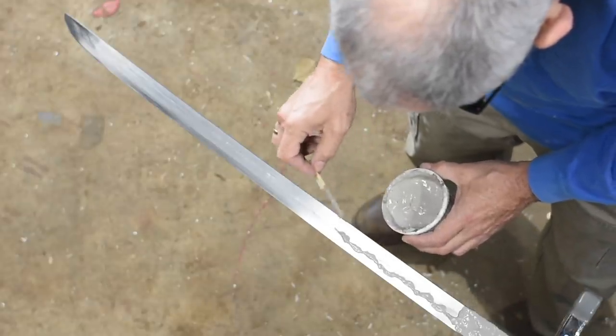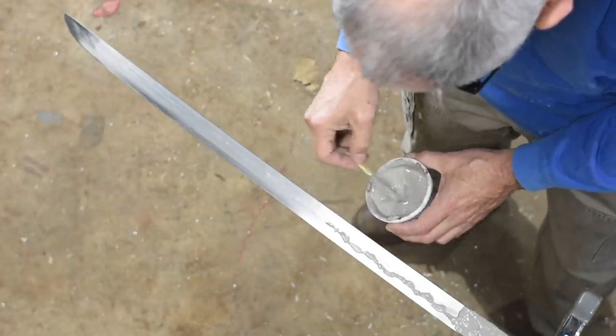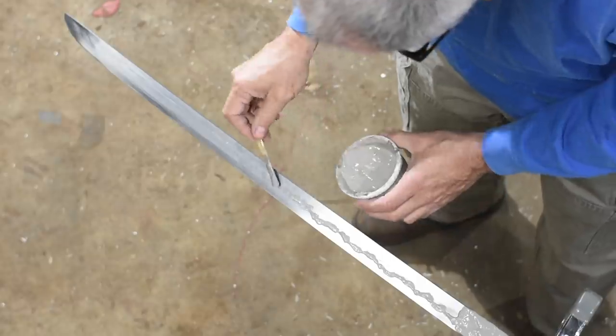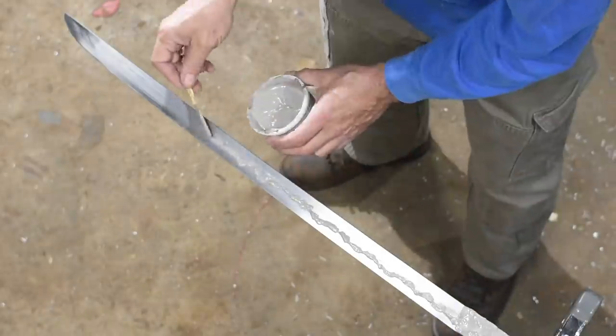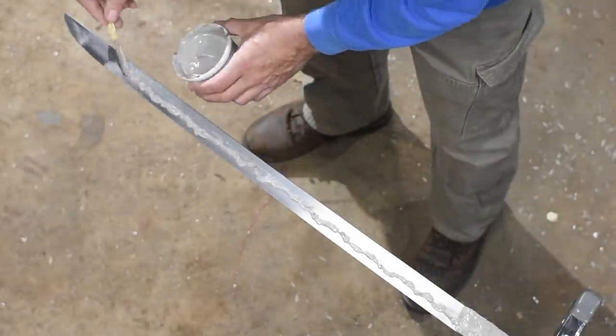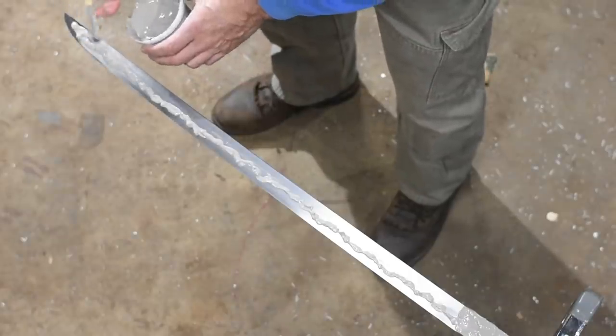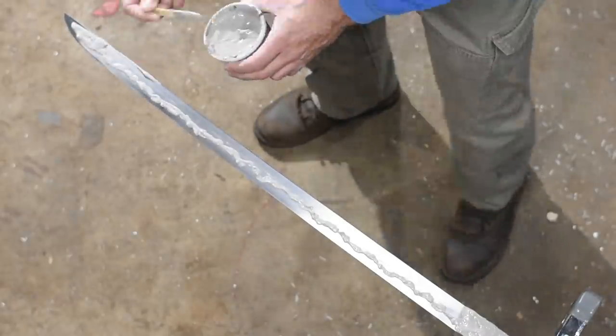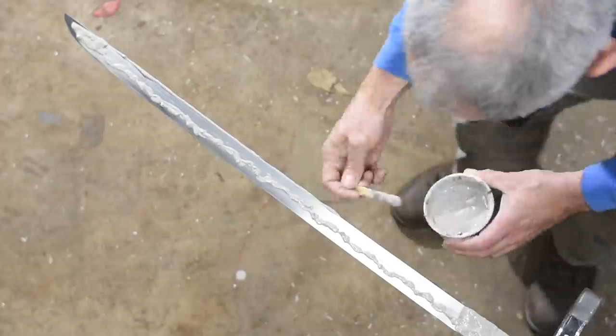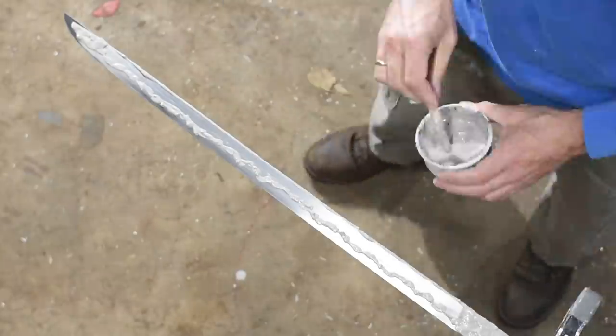A clay material is applied to the spine of the blade and allowed to dry. Traditionally, they use pottery clay and limestone and all kinds of ash, all sorts of things mixed together. I use a modern refractory cement, but the principle is exactly the same as the one developed a thousand years ago in Japan.